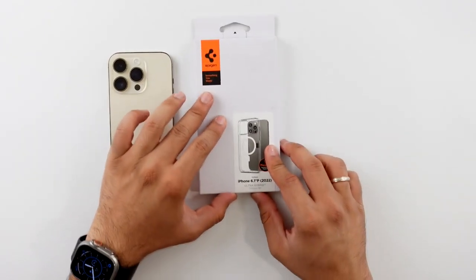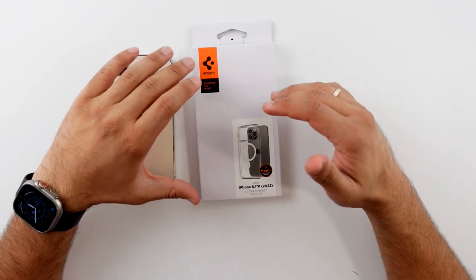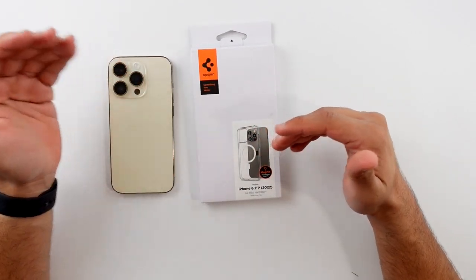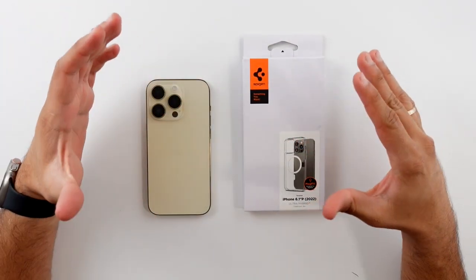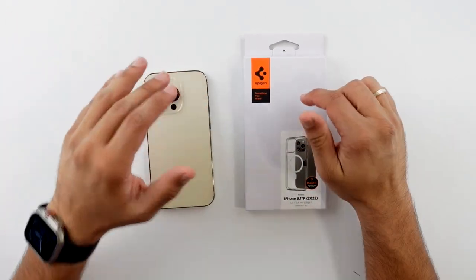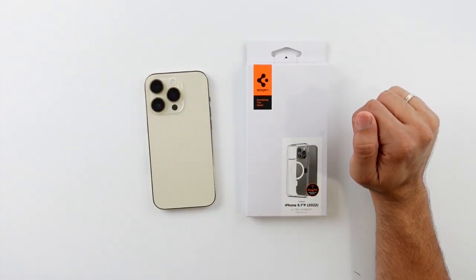Today I'm going to be taking a look at the Spigen Ultra Hybrid, and this has the MagSafe magnets in it as well, so it will perform very similar to the Apple case. The best part is this is $25 versus the $50.